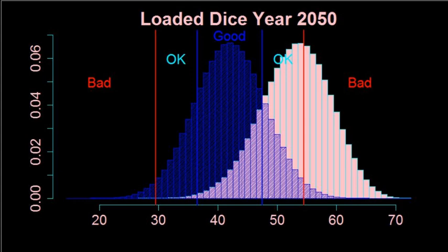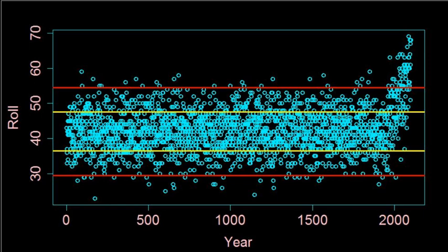Running the game out to the year 2100, loading the dice a little bit more with each passing year, I got this. By year 2100, we rarely get a year that's even okay. The number of bad years is off the charts, and when trouble comes, it's worse than we've seen before.